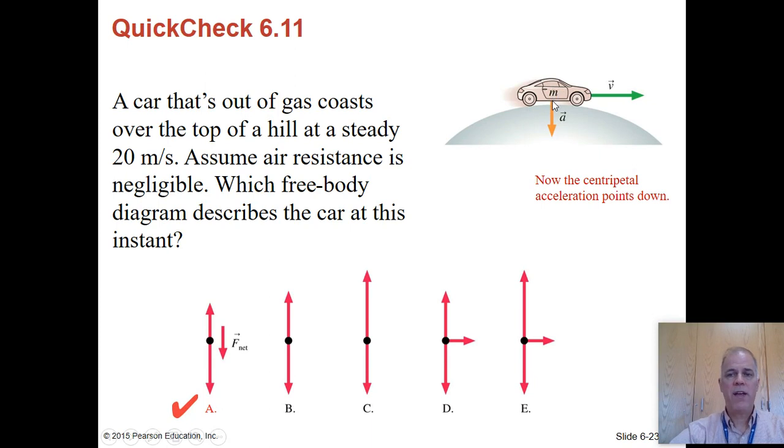Now, at the moment that we've taken our snapshot, it happens to be moving directly to the right, but the trend is for it to be going faster and faster in a downward direction. So that means the net force has to be downward. Another way to look at it is it's following a circular path with the center of the circle below, about where my cursor is right now. So that has to be the direction of the net force because that's the direction of the acceleration.